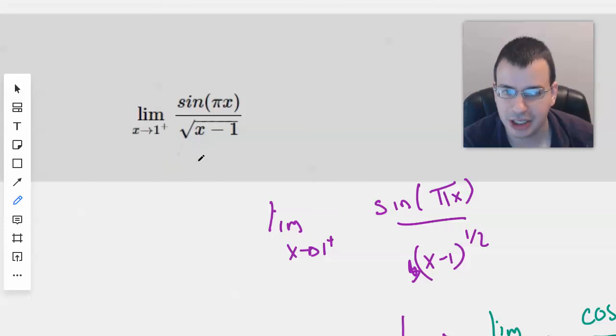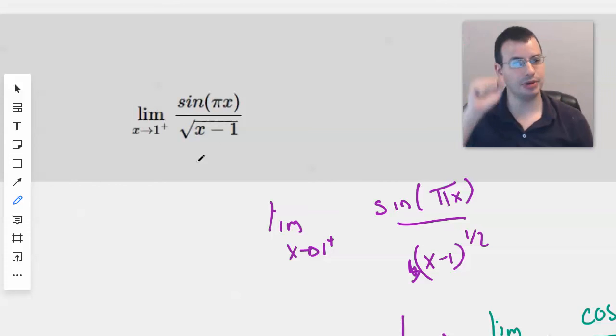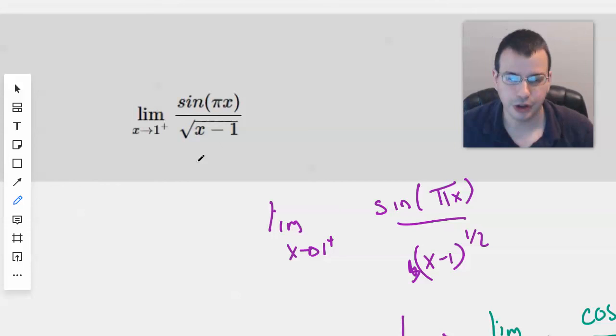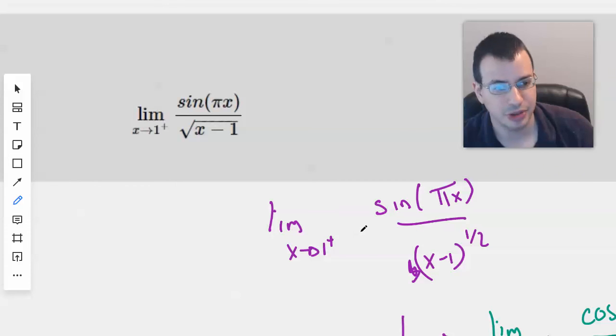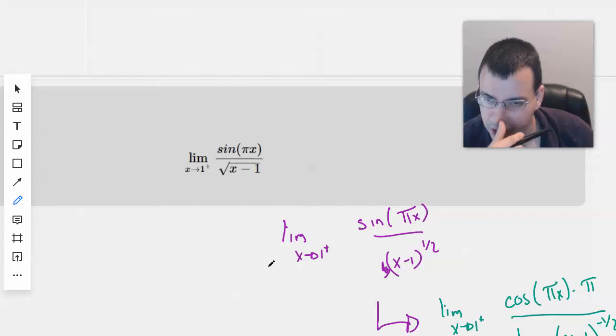So to look back, what we did, we had this limit that we couldn't evaluate at the given value. And so what we had to do was take the limit at the top, the limit at the bottom. This is called L'Hopital's Rule. And then we reevaluate it at the same limit. And that will give us the same answer as the limit to the previous one, except it will be more coherent.